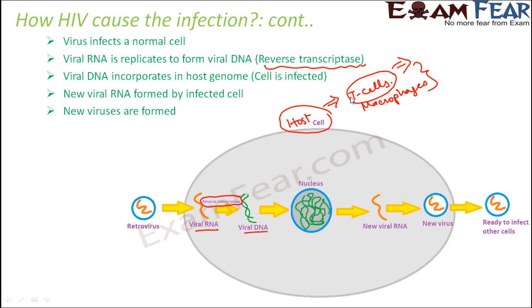When the body becomes completely immune deficient, it cannot fight any infections — the security guards are gone. Even a small minor infection can lead to death. No cure has been found to bring back the damaged immune system, and that is why there is no permanent cure for AIDS. This also explains why it is very important to take precautions against getting infected.